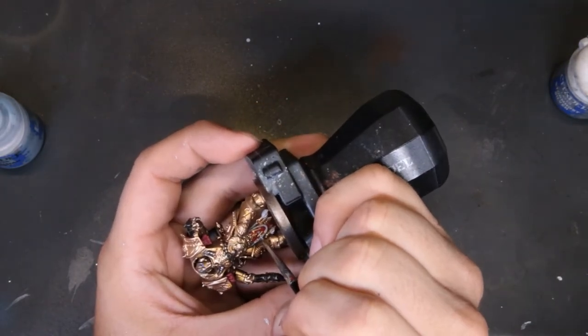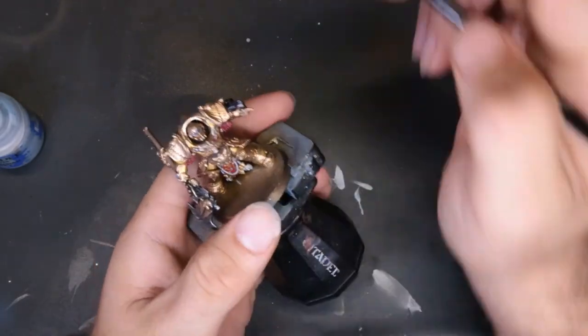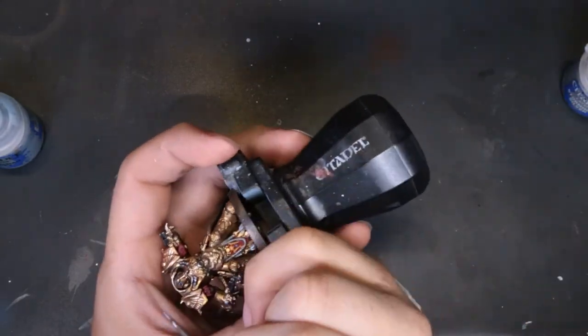Eventually we go to just a dot of Ceramite White on there to cap that off and make it look like a solid gem effect.